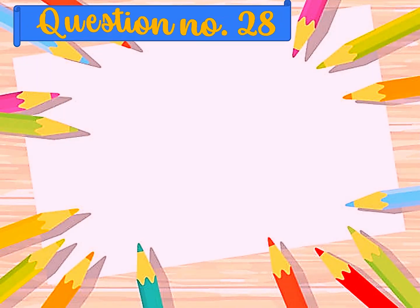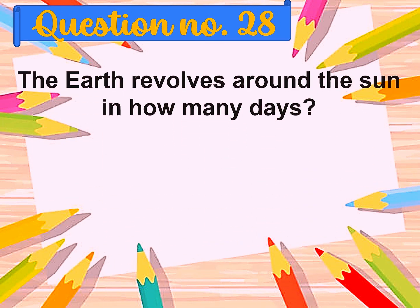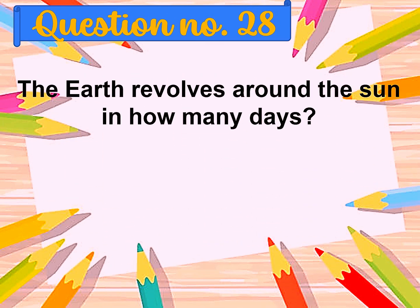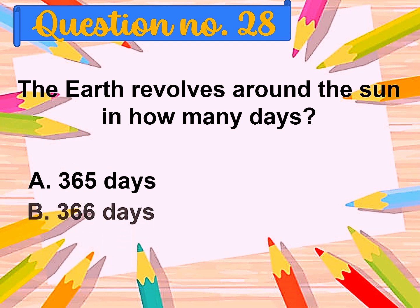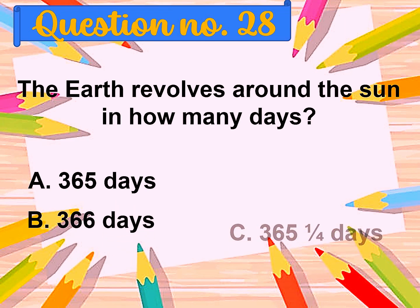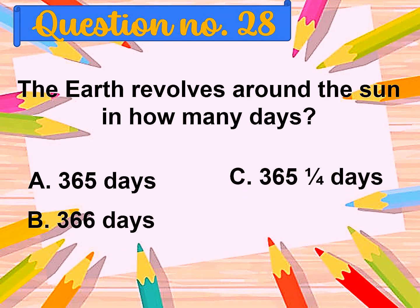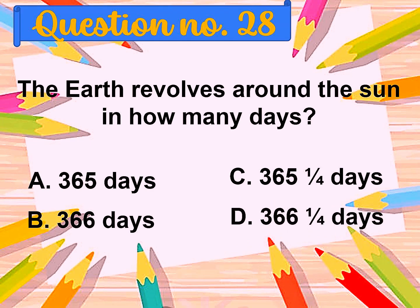Question number twenty-eight: The Earth revolves around the Sun in how many days? A. Three hundred sixty-five days, B. Three hundred sixty-six days, C. Three hundred sixty-five and a quarter days, D. Three hundred sixty-six and a quarter days.